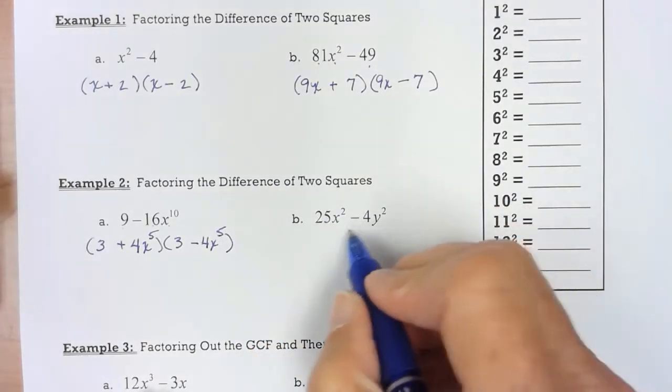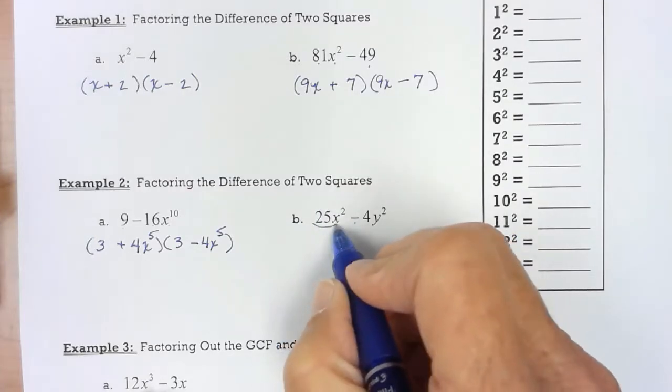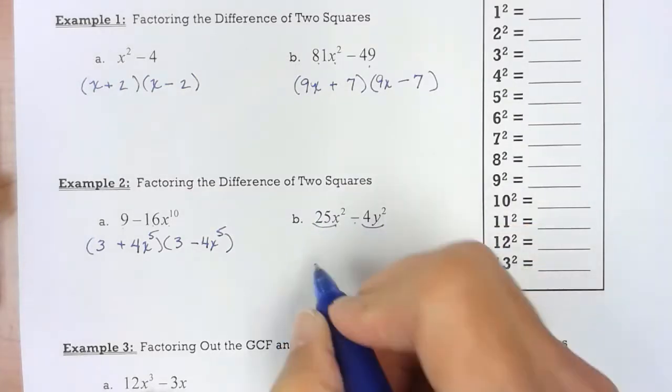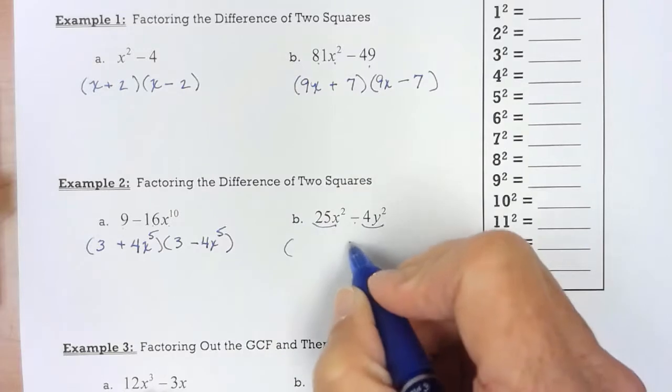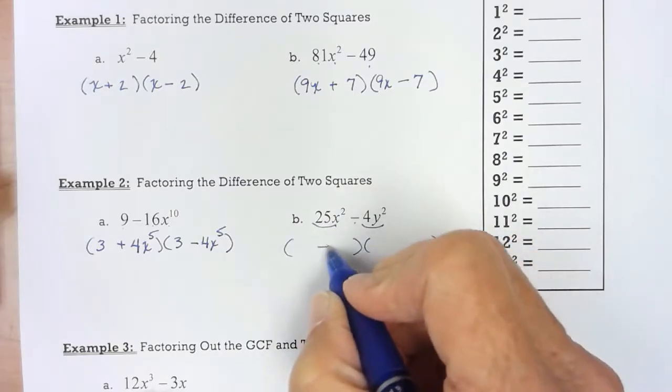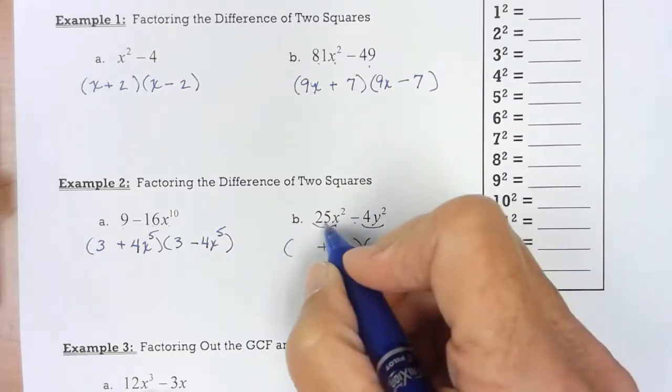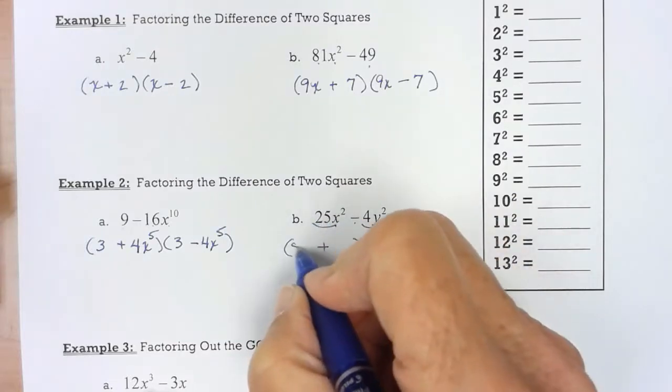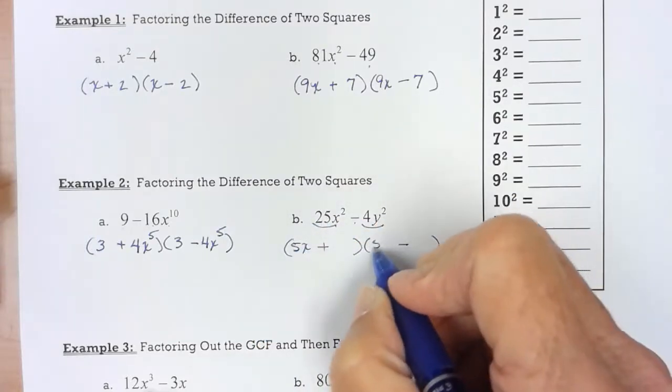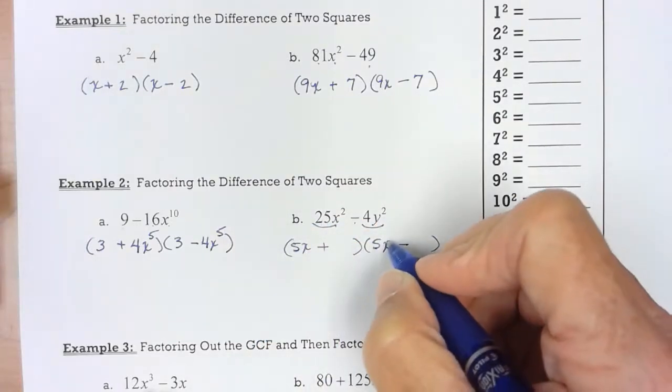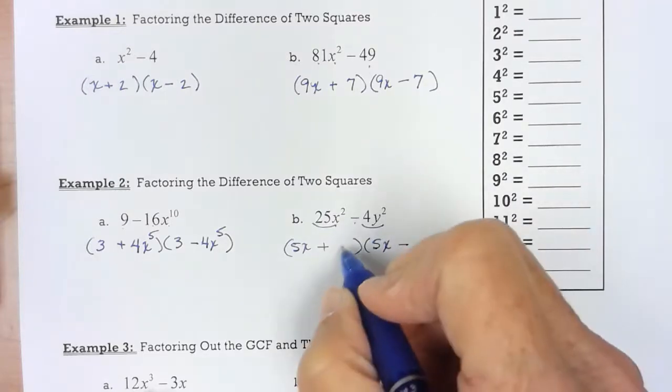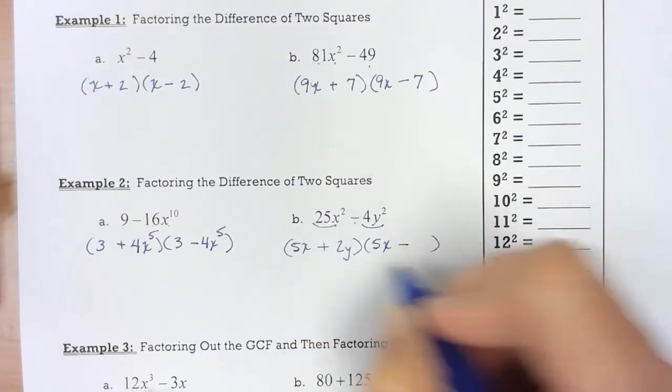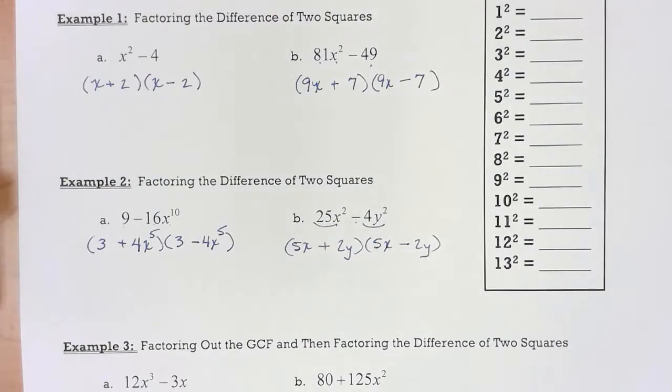Let's try this one. I have a difference. Both of those are perfect squares, as is those two. Square root of 25x squared is 5x. So place that in the first position. Square root of 4y would be 2y. So there's that.